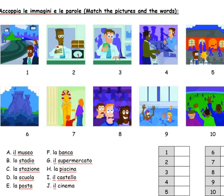The answers for matching pictures and words: number one — la stazione, 1c. Number two — la posta, 2e. Number three — apologies for the pause, I couldn't work out what picture three was, but it is the bank, la banca. Number four — il supermercato, 4g. Number five — la scuola, 5d. Number six — il castello, 6i. Number seven — il museo, 7a. Number eight — il cinema, 8f. Number nine — la piscina, 9h. Number ten — lo stadio, letter b.